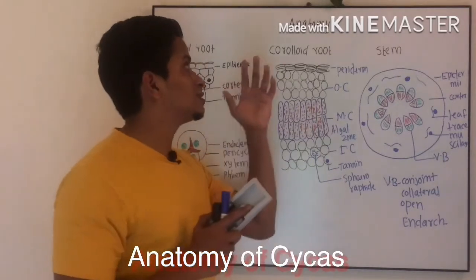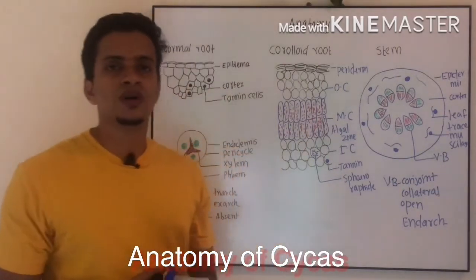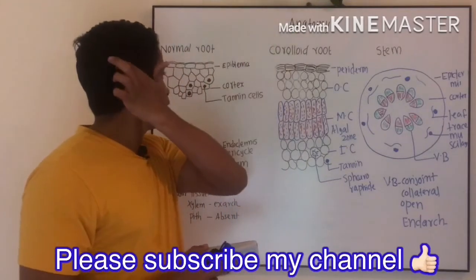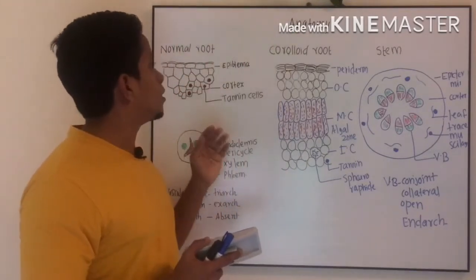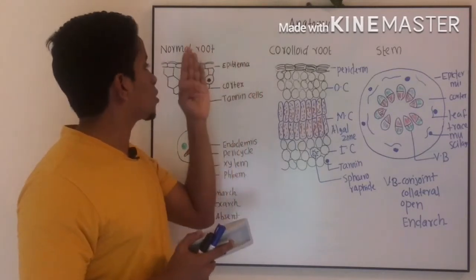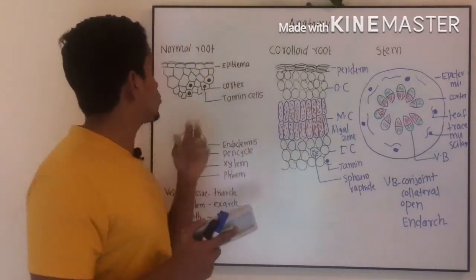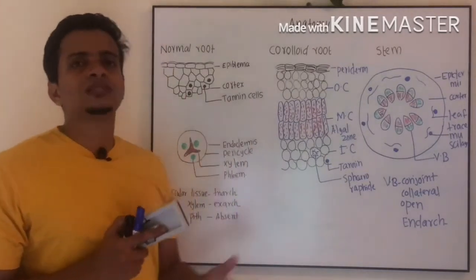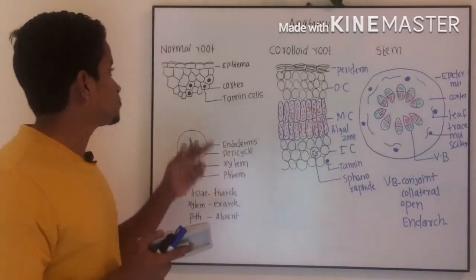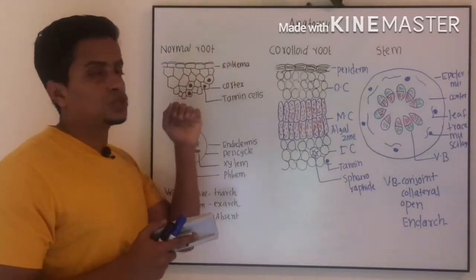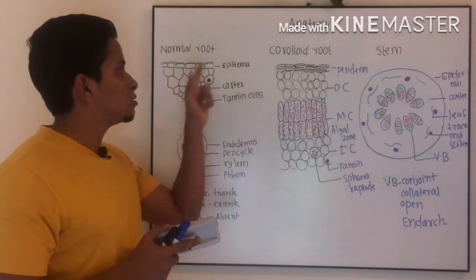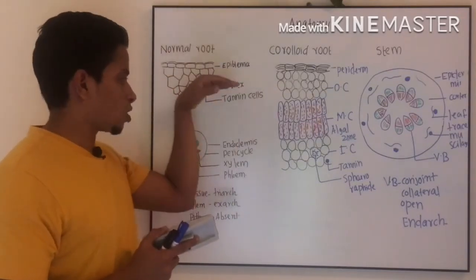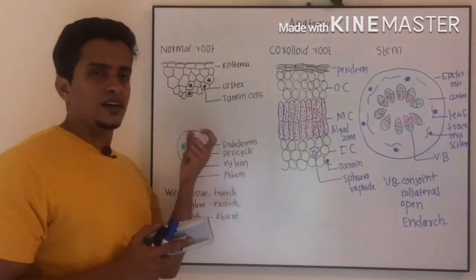Okay, now we are discussing the internal anatomy of each part of the sporophyte. So anatomically, we are going to discuss the internal anatomy of normal root first. It is somewhat similar to dicot root in anatomy. It is composed of many parts. The outermost layers are differentiated into epidermis, cortex, and a stela region.